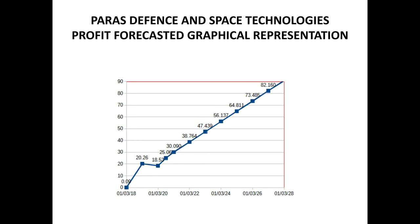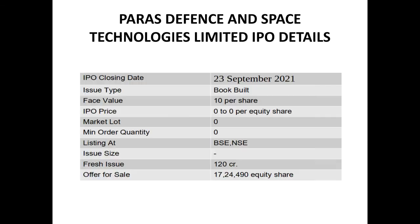This graph represents the Paras Defense and Space Technologies Profit Forecasted Data. Now let's know about the Paras Defense and Space Technologies IPO Details. The IPO opening date is 21st September while the closing date is 23rd September 2021. Issue type is book built, the face value is 10 per share, and the IPO price has not been announced yet along with market lot, minimum order quantity and issue size.